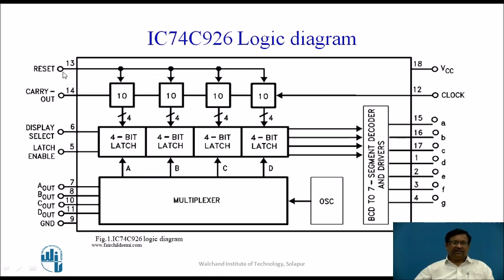When this reset is active high — when we connect logic 1 to this reset input — these counters are reset to 0. When the clock pulse is applied, at the negative edge of a clock pulse, this counter counts in the upward direction. This is a units counter, this is a tens counter, this is a hundreds counter, and this is a thousands counter. After that we get a carry out signal generated out of the most significant counter, which is used for cascading other IC74C926 if you want to count beyond 9999.